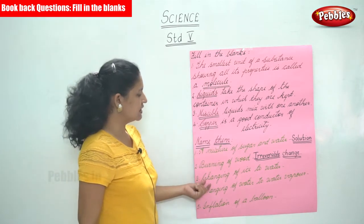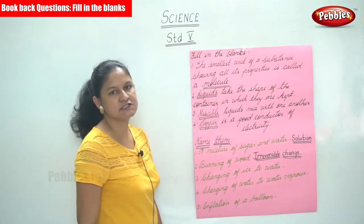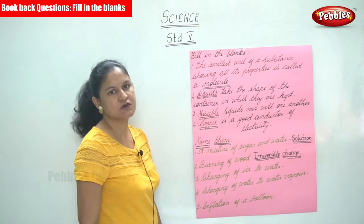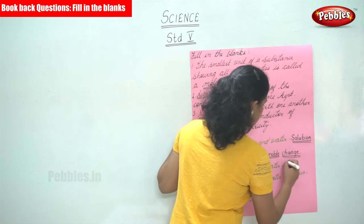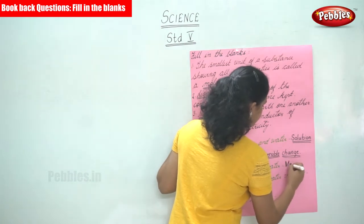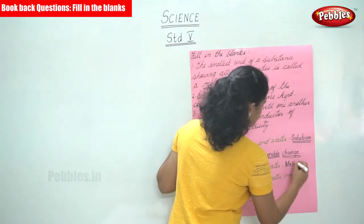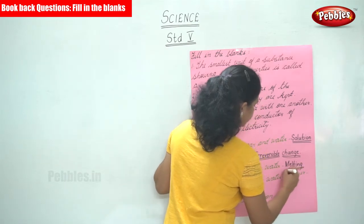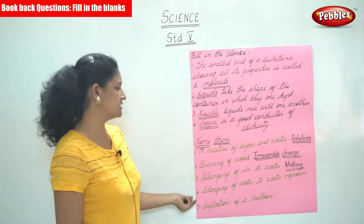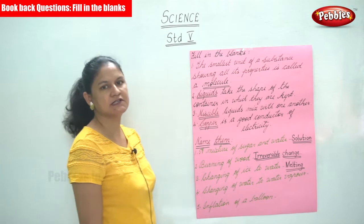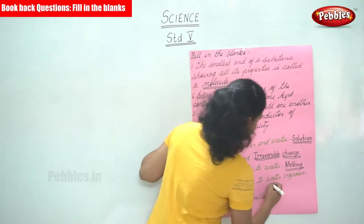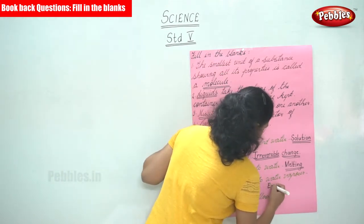The next is: changing of ice to water is known as melting. So changing of ice to water is termed as melting. The next is: changing of water to water vapour is evaporation. So changing of water to water vapour is evaporation.